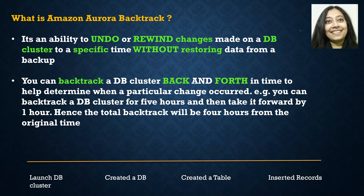Let us begin with what is Amazon Aurora Backtrack? Backtracking is an ability to undo or rewind changes made on a DB cluster to a specific time without restoring data from a backup. So typically, if you had to undo any changes made on your database cluster, you would have to go and get a backup, restore a snapshot, or perform one of those operations.